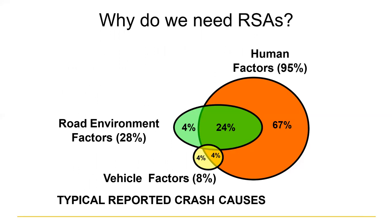A roadway safety audit also allows us to control a portion of crashes. Crashes have many causes, and this Venn diagram shows those causes. Human factors — things that drivers do — are present in 95% of our crashes. So if you've thought driver distraction is one of the biggest issues, you're correct. But if you've also thought there's not much I can do about it, you're wrong. Road environment factors are present in 28% of crashes, and as an owner of the roadway, that's what you can have a direct impact on.